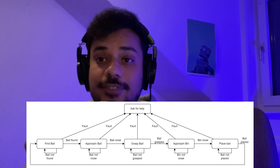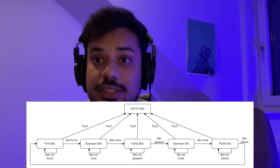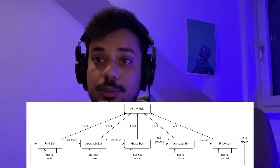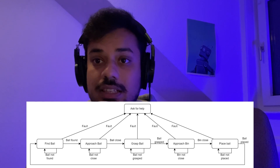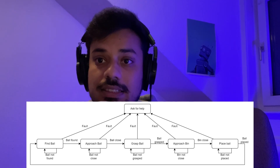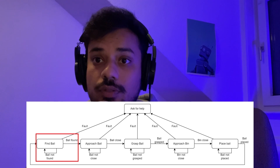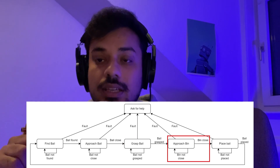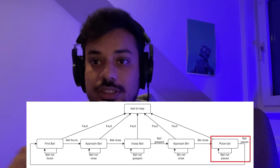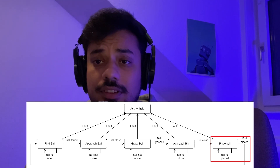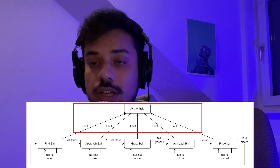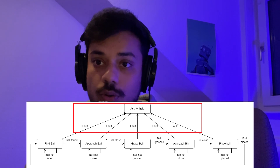The state machine has finite states and it is sequential, meaning the current state depends on the previous state and the input, given through sensors. For instance, the first state is finding the ball. If the ball is found, we go to the next state to approach the ball. If we've approached the ball, we go to grasping the ball, then we go to the bin, drop the ball, and the process repeats. But if there is a fault, the system should ask for help.